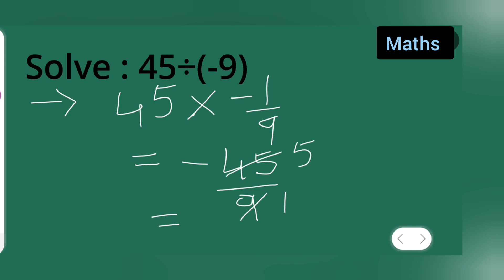are 45, so you will get minus 5 as your answer, is equal to minus 5. So I hope you all have understood how to divide 45 divided by minus 9. Thanks for watching!